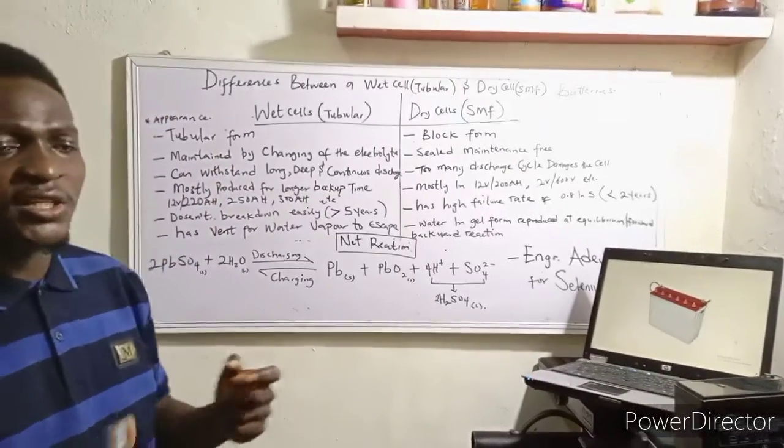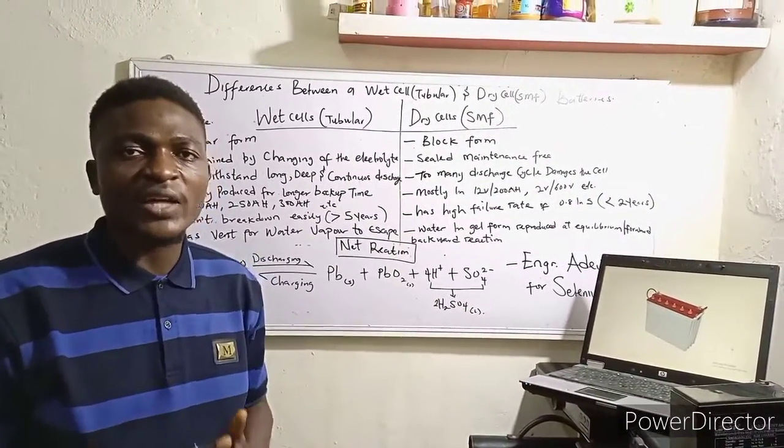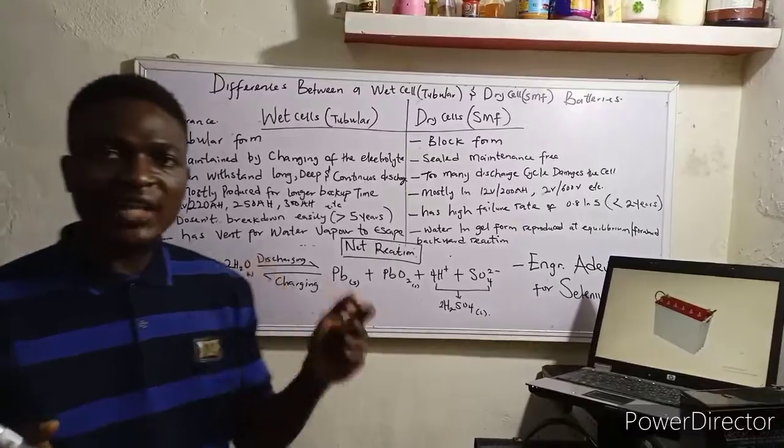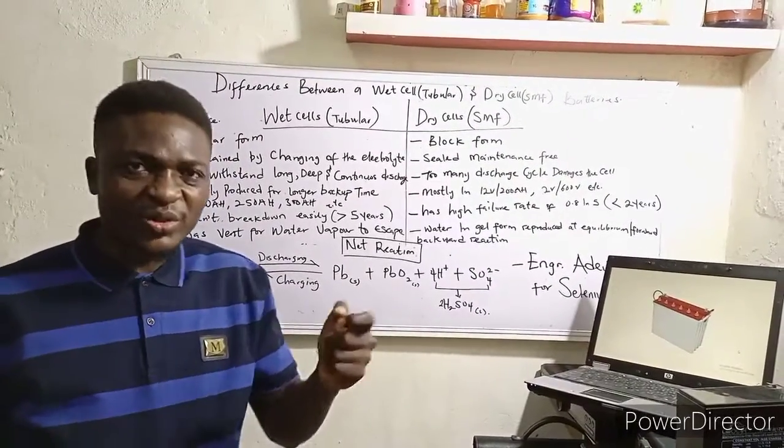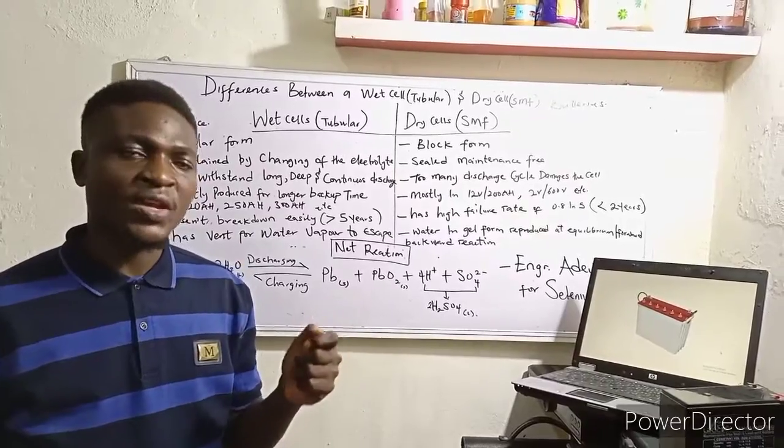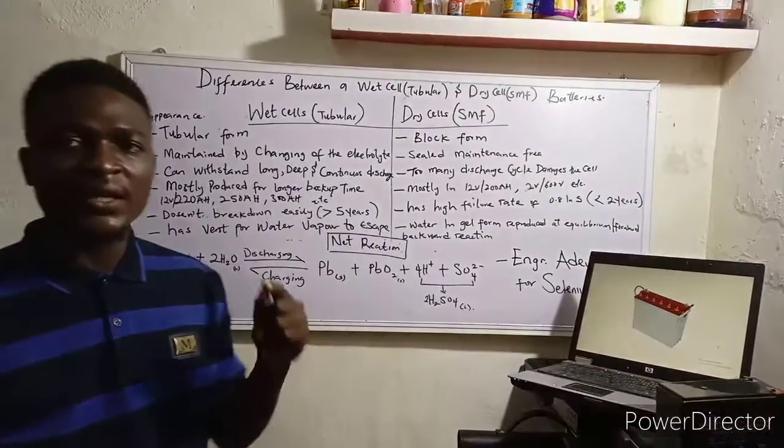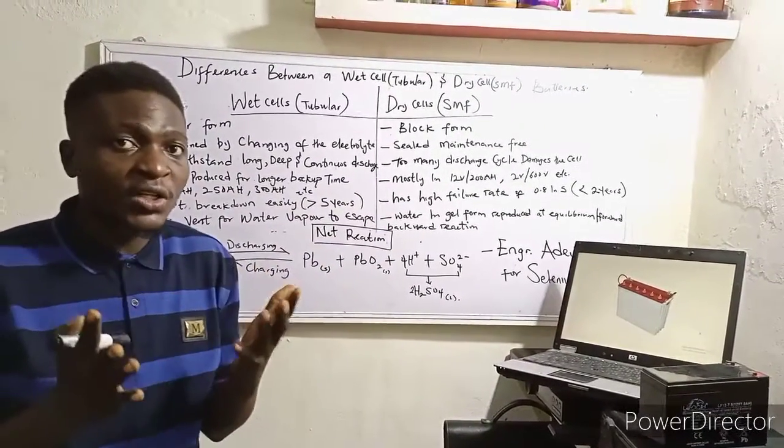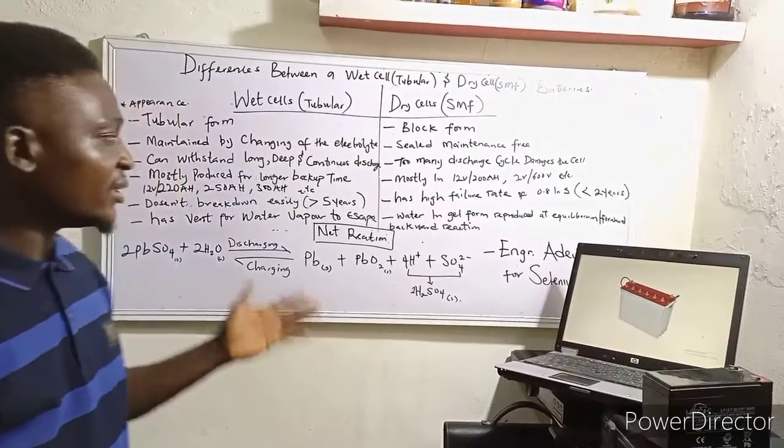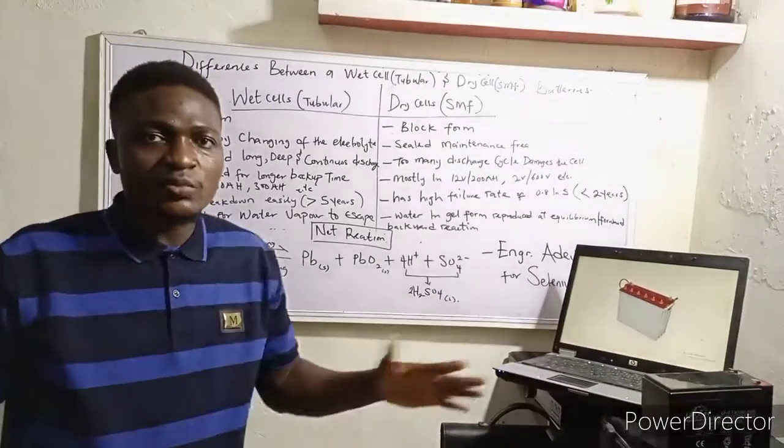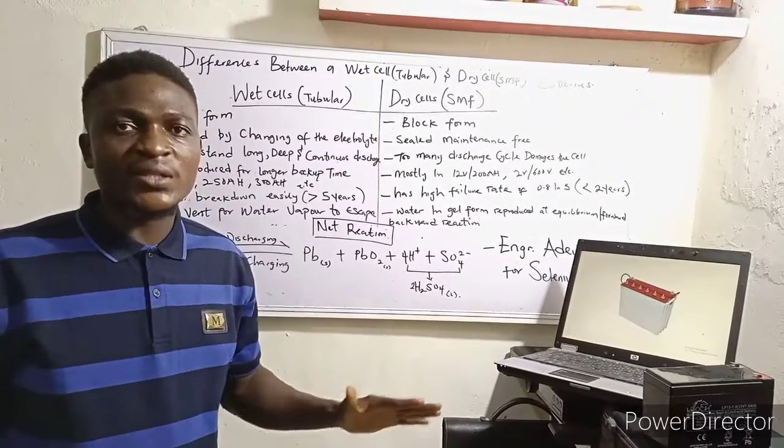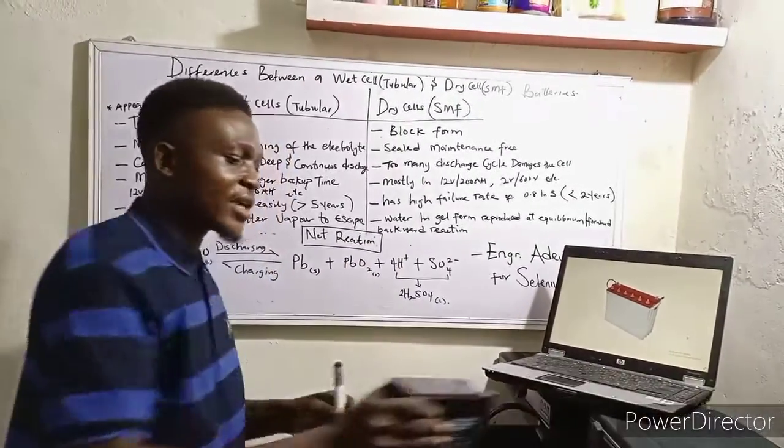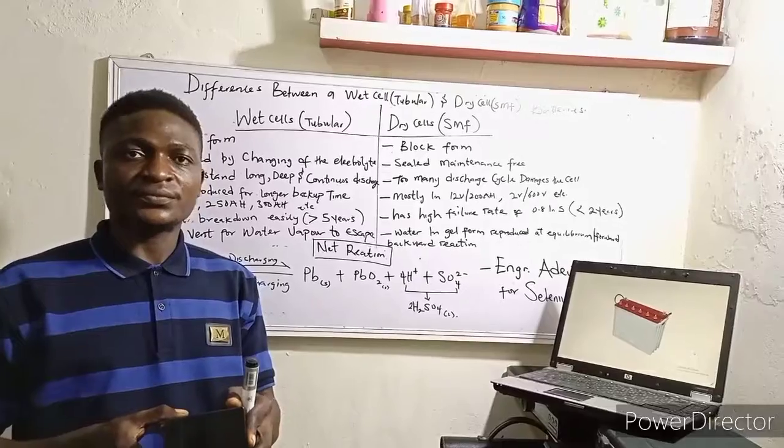Now, what are the advantages and disadvantages of a wet cell battery over a dry cell battery and vice versa? The advantage is the durability, the longevity. The disadvantage is it keeps producing vapor that could be choking; the smell could be choking sometimes. While in dry cell, it is sealed, maintenance-free, no choking smell, no anything. You don't even need to maintain it. It's just as it is. In fact, you can place it anywhere. You can install it horizontally, vertically. All you just have to make sure is that these two terminals do not short together.